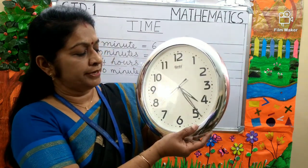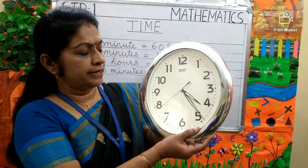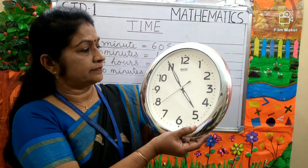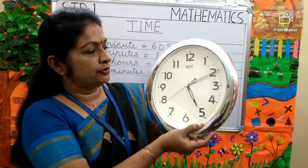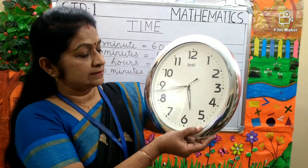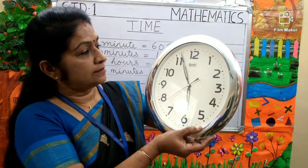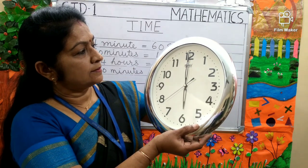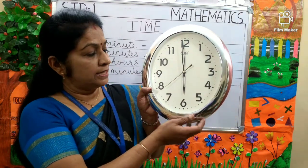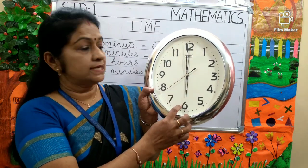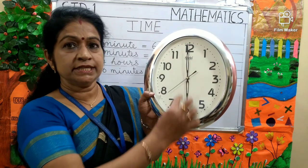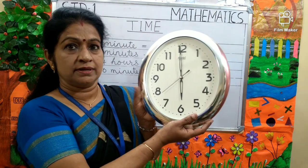Again this minute hand is moving round the clock. Can you tell me the time now? The hour hand is on 6 and the minute hand is on 12. So the time is 6 o'clock.